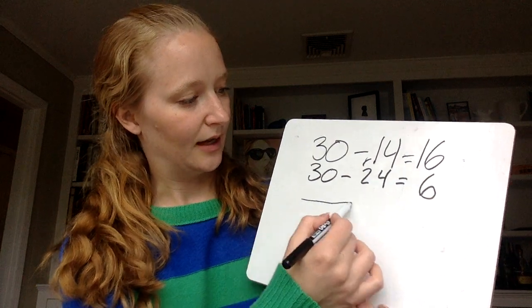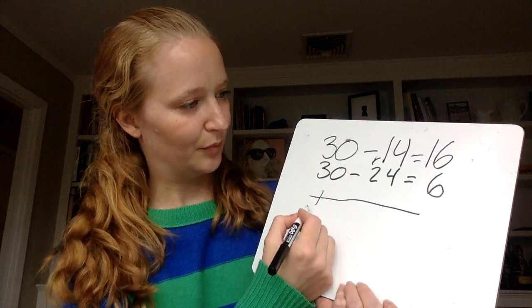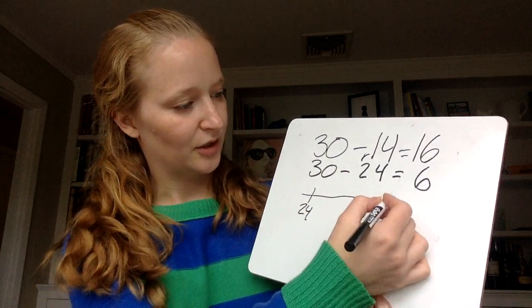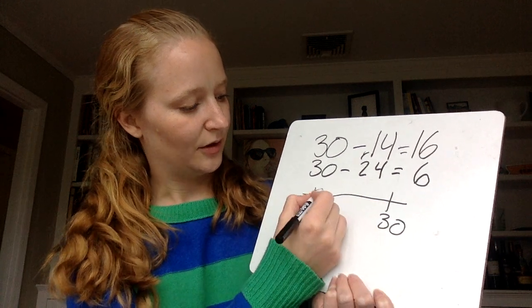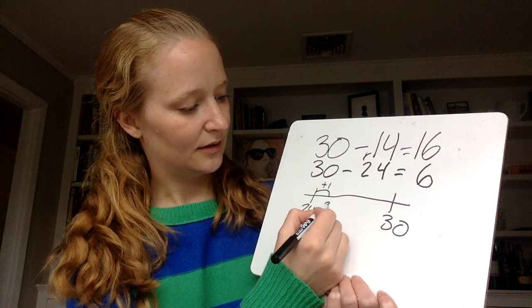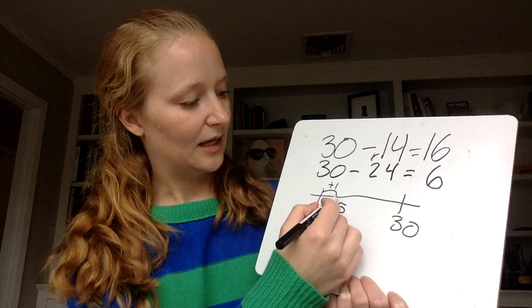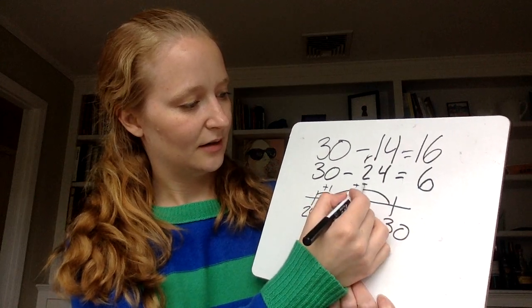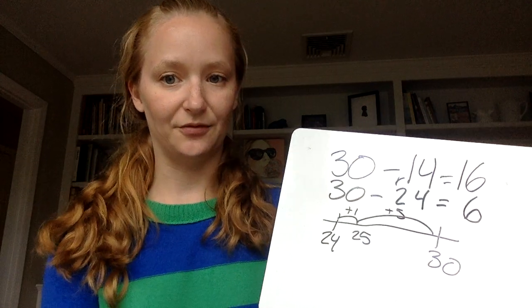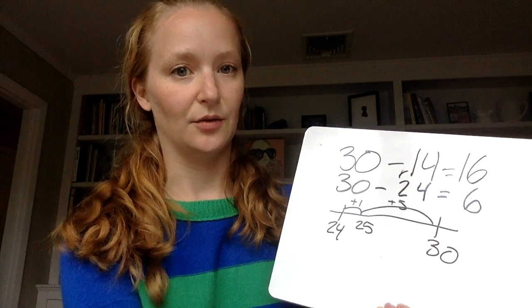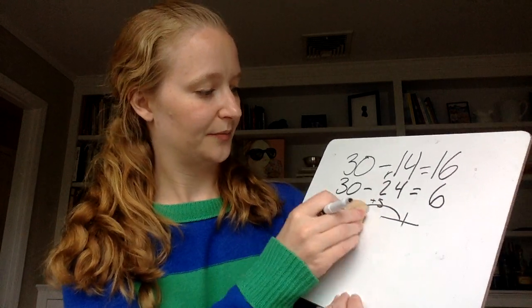And a way to really prove that again is if I look at that number line. I have 24, I'm trying to get to 30. 24 plus 1 is 25, and then another 5 gets me to 30. So that difference of 6. But able to use the relationship between those two problems.